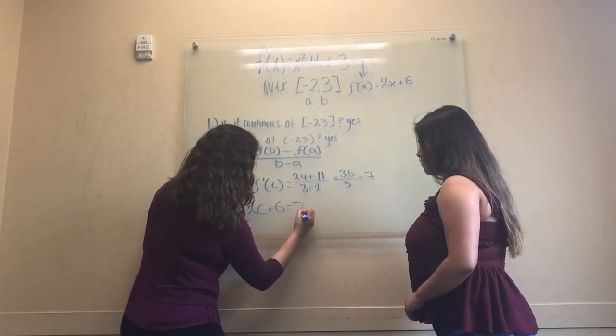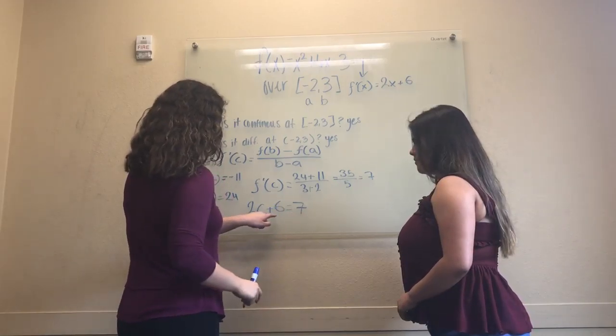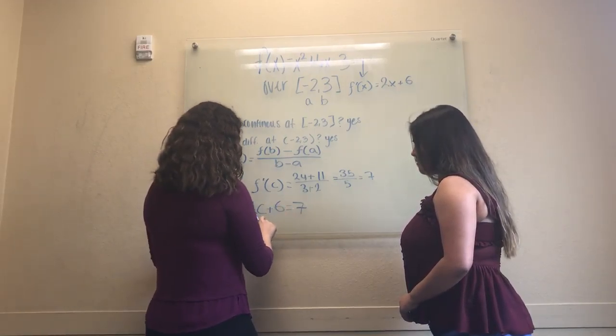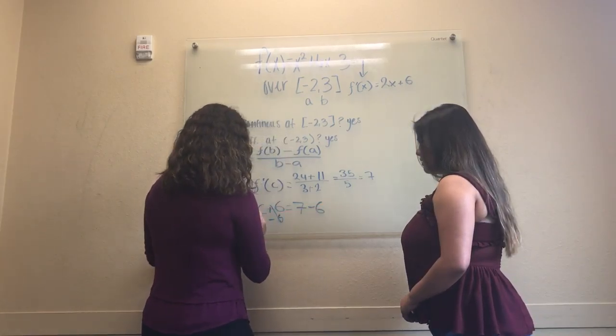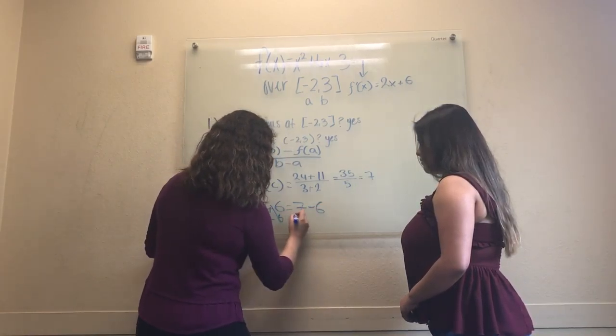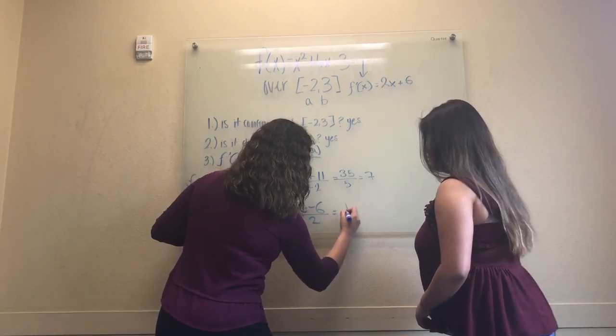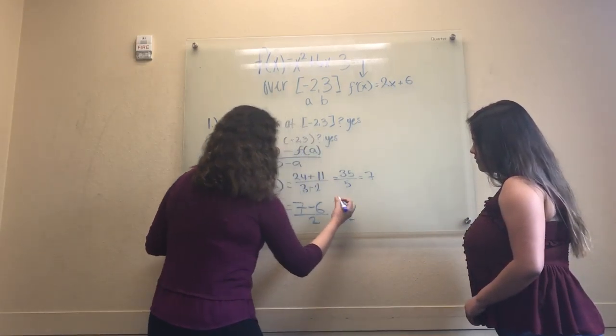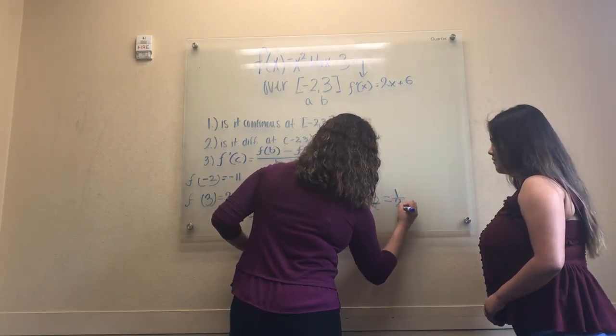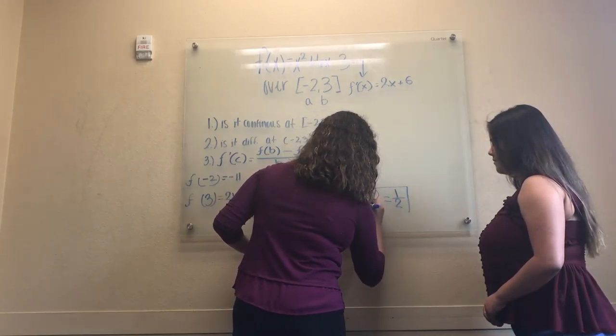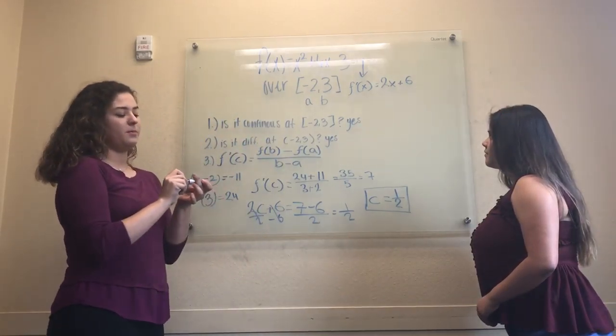So we have 2c plus 6 equals 7. Because we want to find c, we'll subtract 6 and divide by 2. So because this is 1 over 2, we end up with c equals 1 half. And that's your final answer.